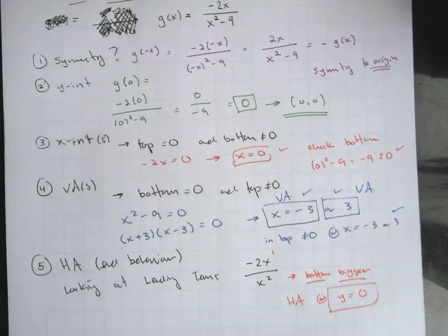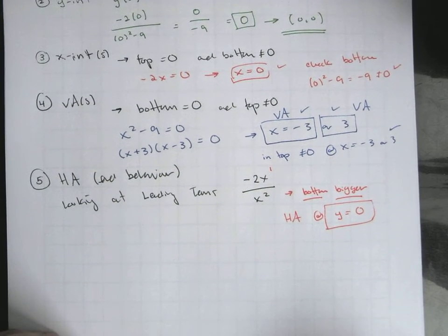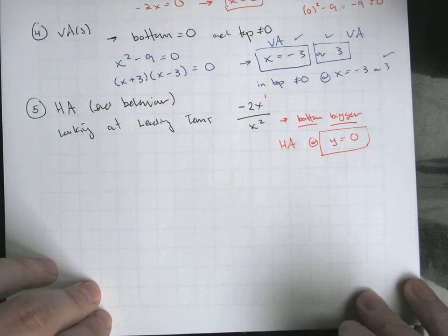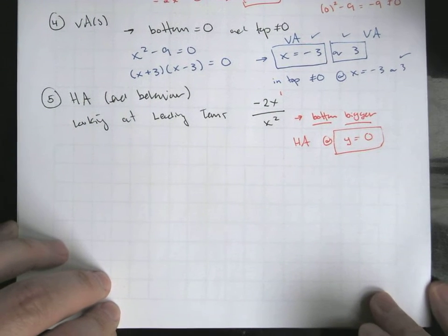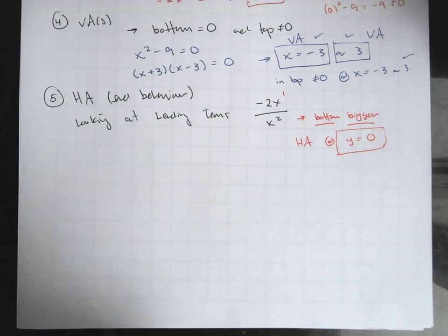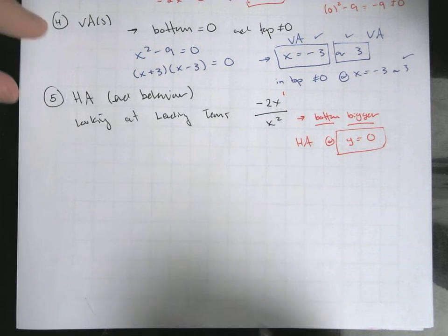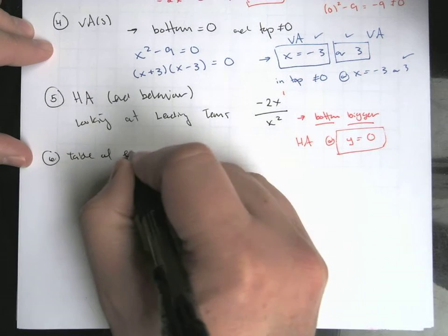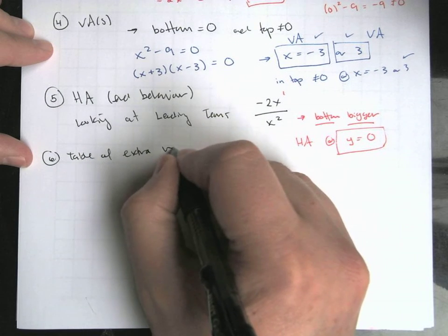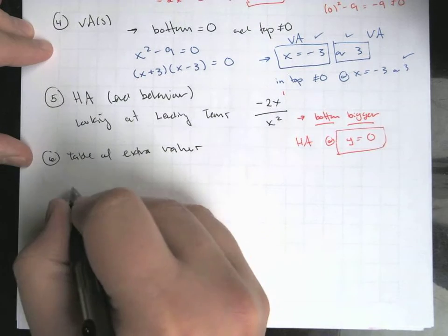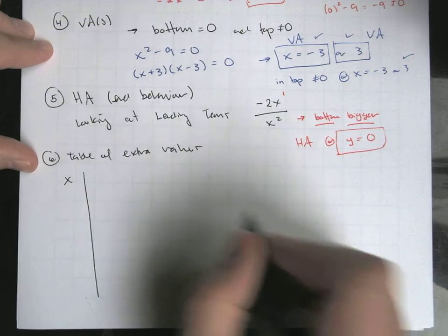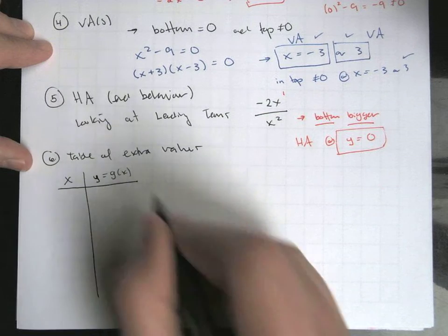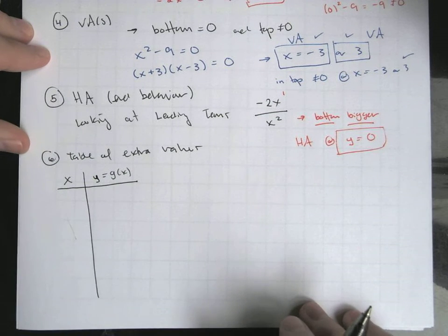Let's line up. So we have our vertical asymptotes, our x-intercepts. We need to get our function values. We need some test points in between those things, in between our x-intercepts and our vertical asymptotes. So the table of extra values. So we'll list them over here. We'll do the calculations over here. So our y value, which is our g of x.